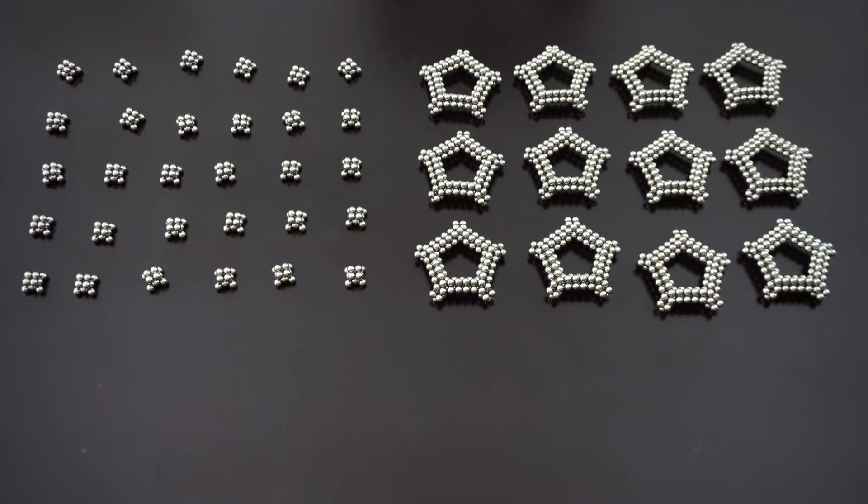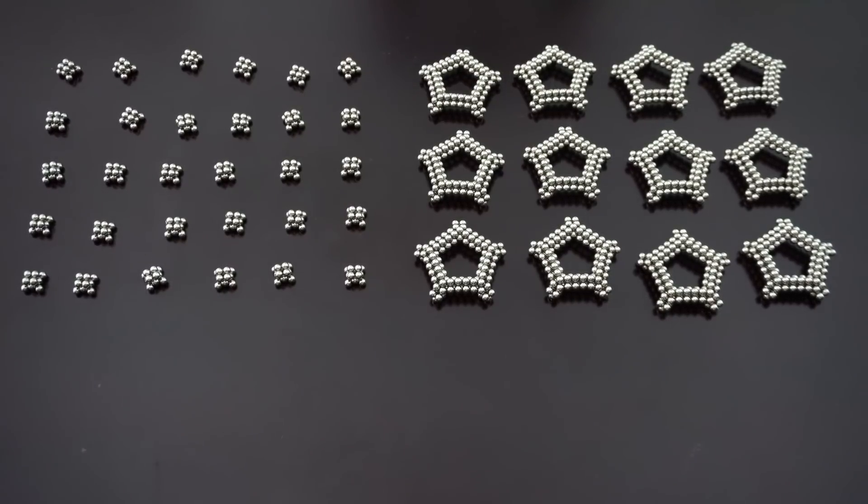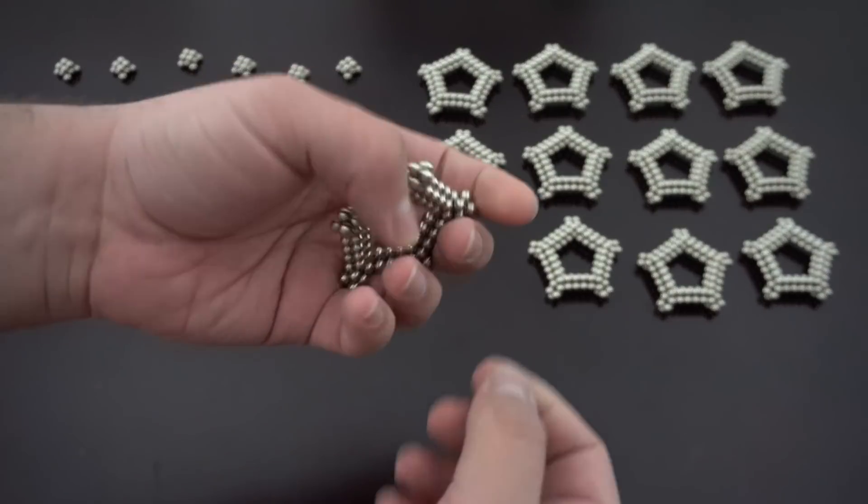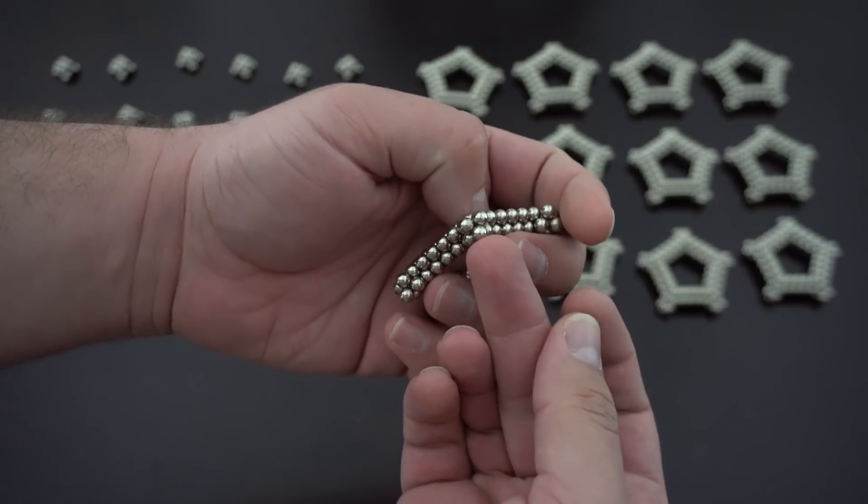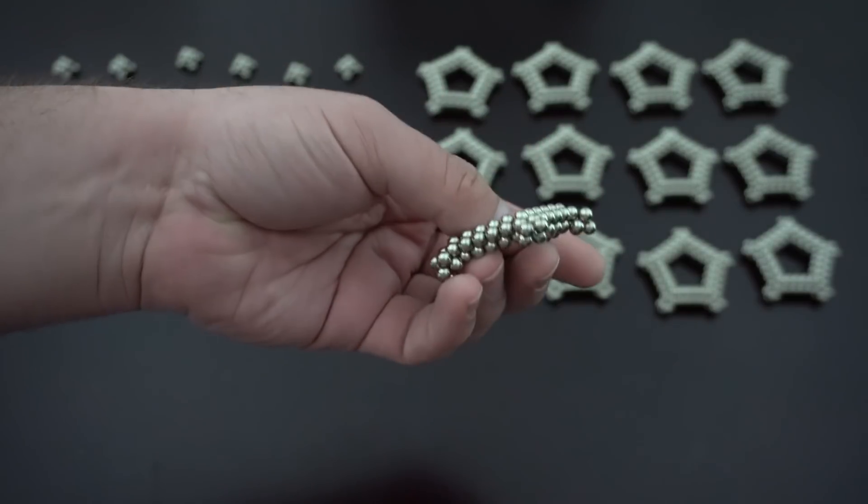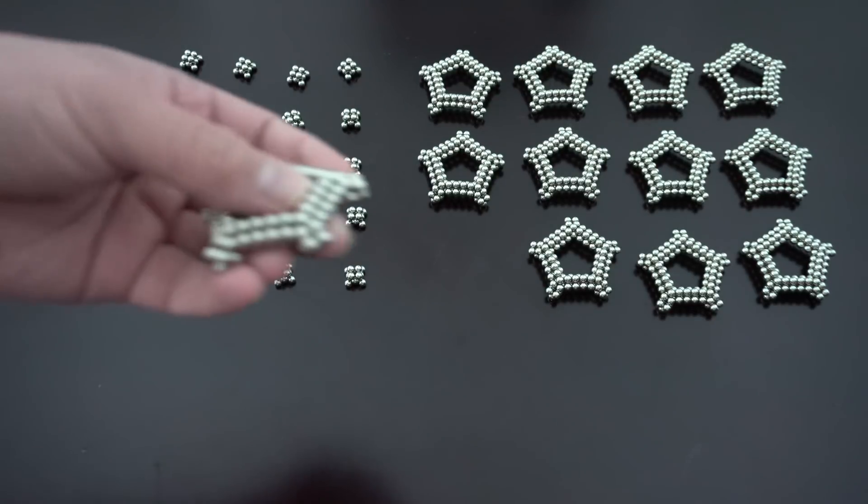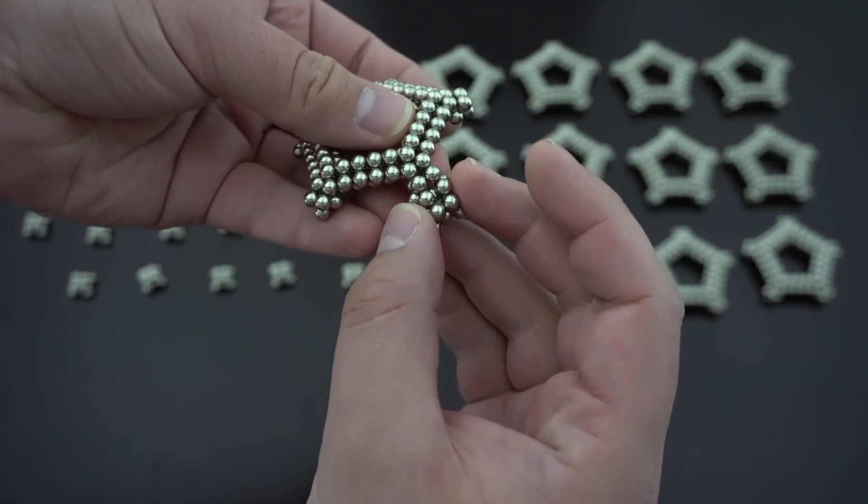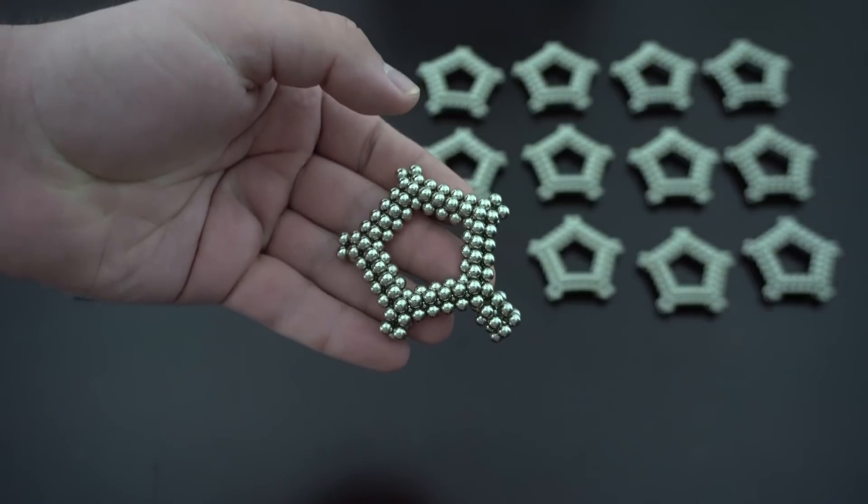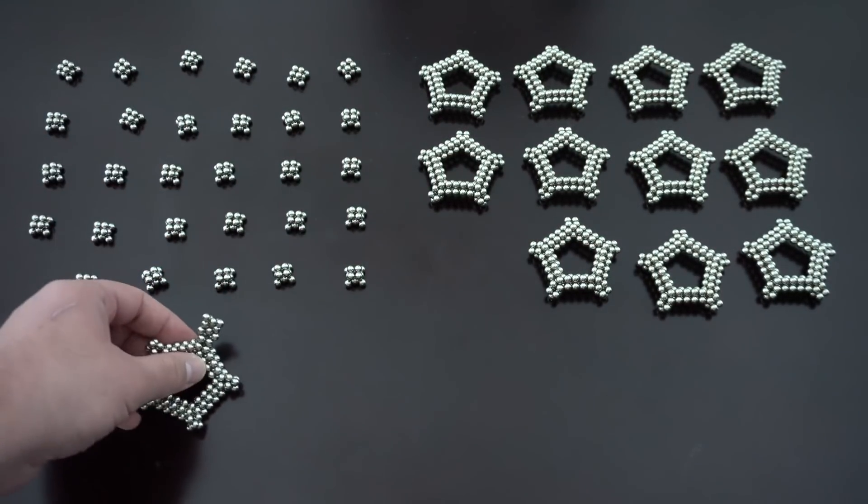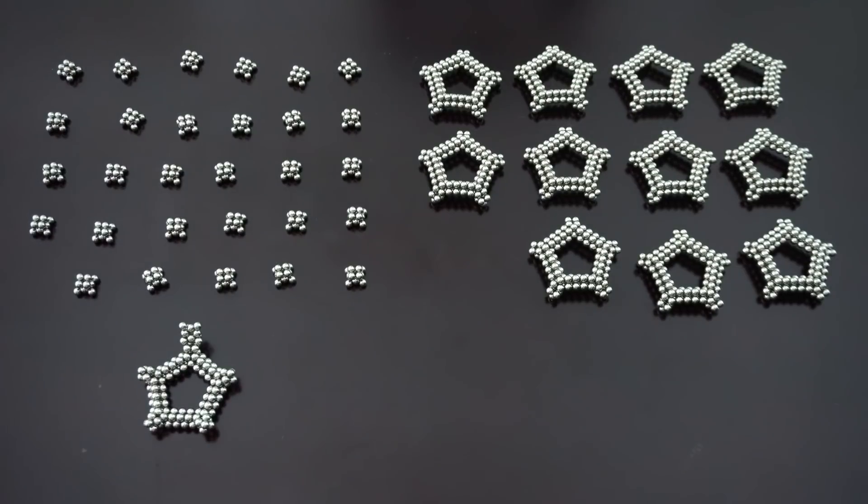So to begin assembling this, you attach these to the ends of these. The way that's done is you remove a single magnet from one of these ends, and one of these will just click right on just like that.